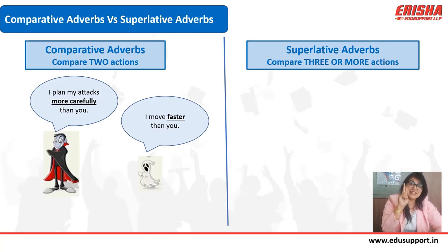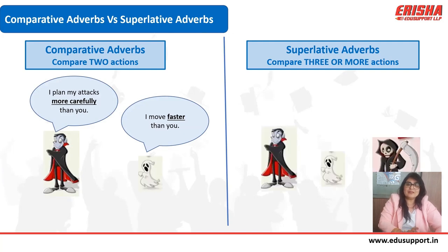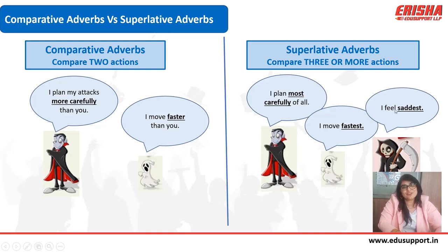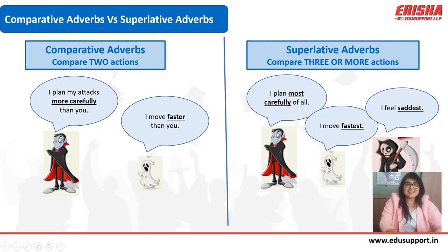Superlative forms of adverbs are used to compare three or more actions. For example: 'I plan most carefully of all three,' 'I move fastest of all three,' or 'I feel saddest of all three.' 'Most carefully' means out of how carefully the other two are planning, I do it the best.